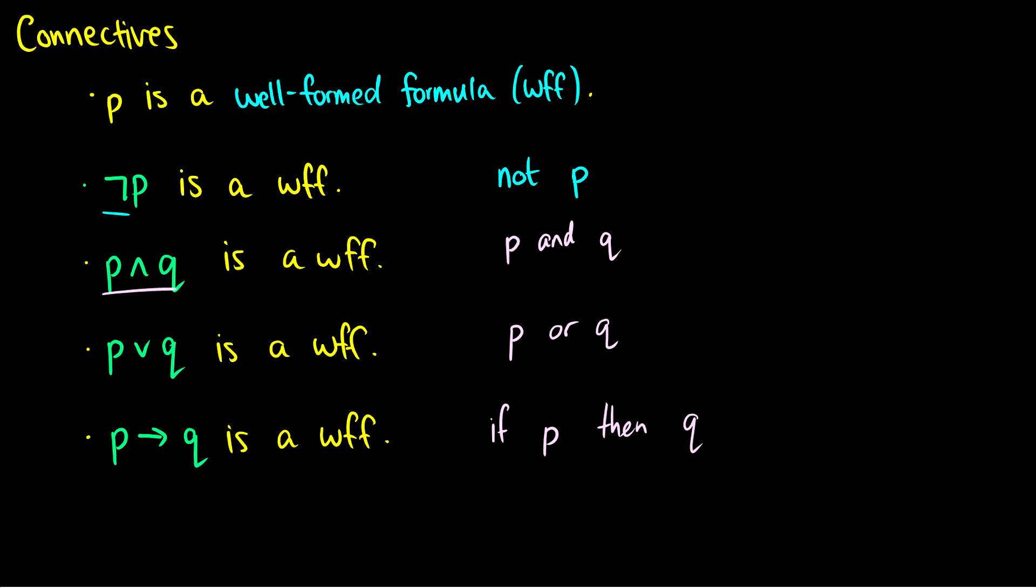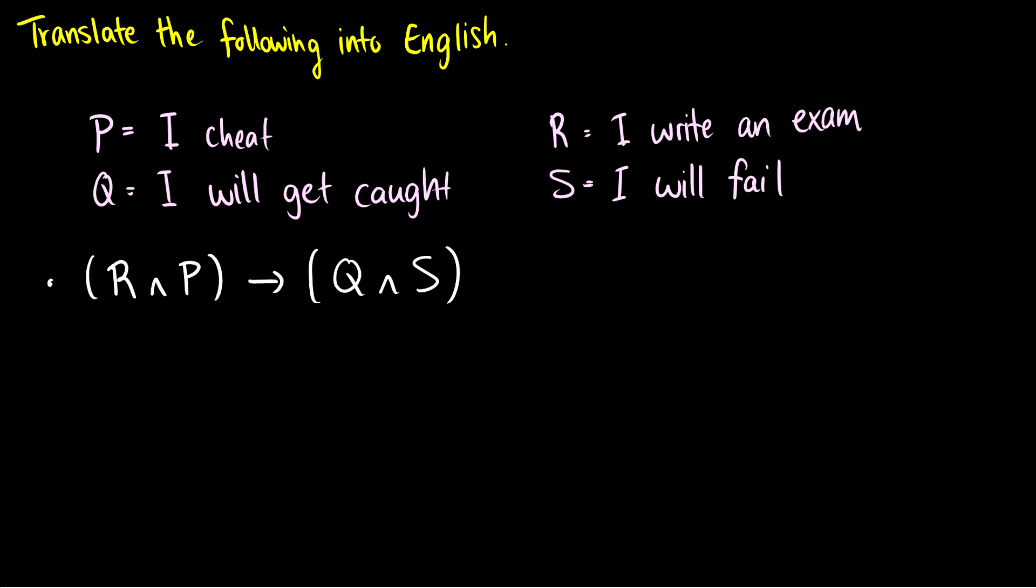And when we get to the truth tables video, we'll learn about the truth conditions of each of these and how the truth output changes depending on the truth value of the propositions. But for now, I just want to focus on translating these into English. So here is a key of propositions, and here is a well-formed formula. And I'm saying translate the well-formed formula into English.